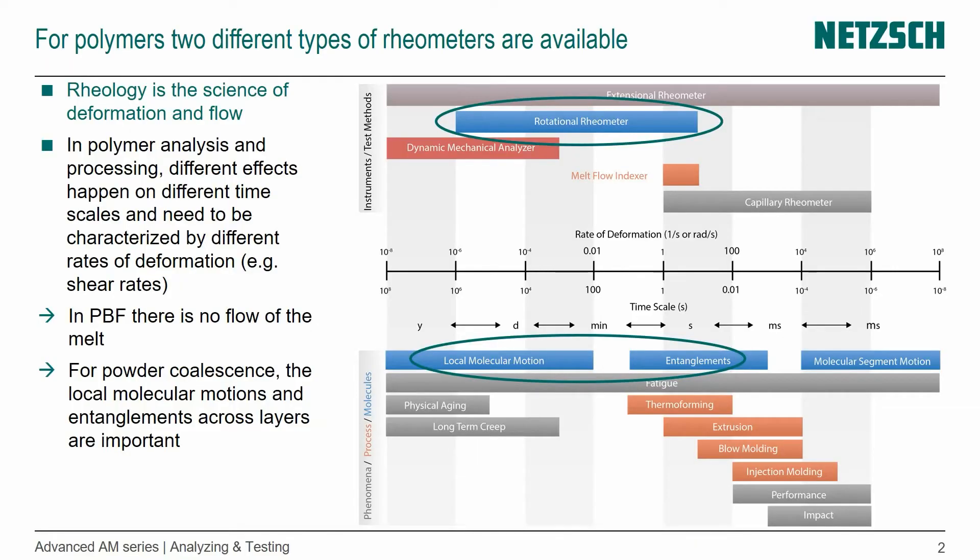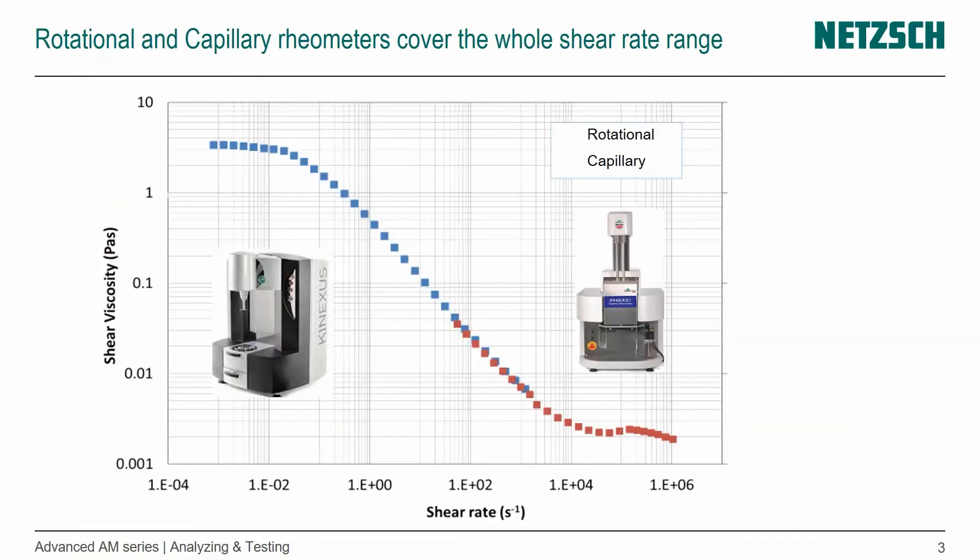So we're focusing on the rotational rheometer, but I still wanted to show you how a typical flow curve looks that we can generate by using the two types of rheometers. That's really what you want to characterize a polymer for, where you use a rotational rheometer like our Kinexus to study the viscosity at low shear rates.